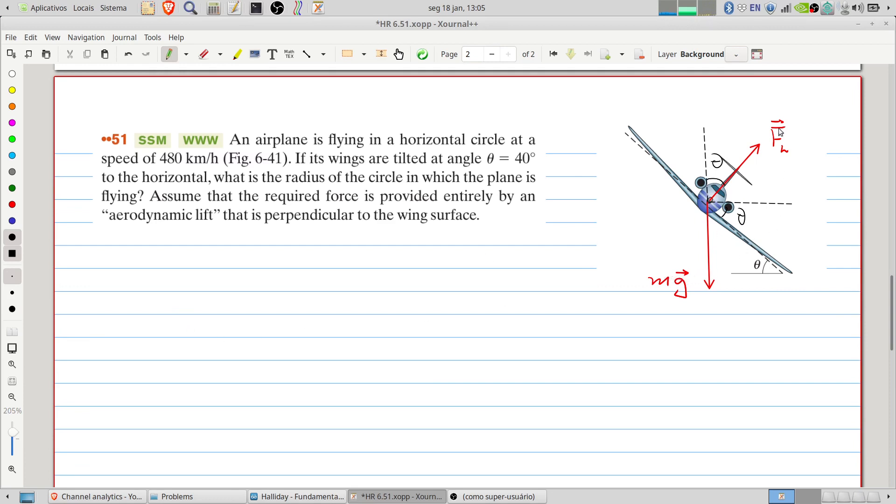So we can apply the second law of Newton. Sum the forces in the vertical direction. We can write that the sum of the forces in the vertical direction will be zero because you won't have any movement in the vertical direction.